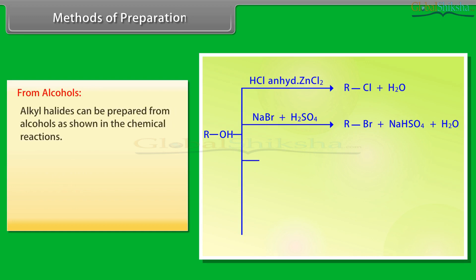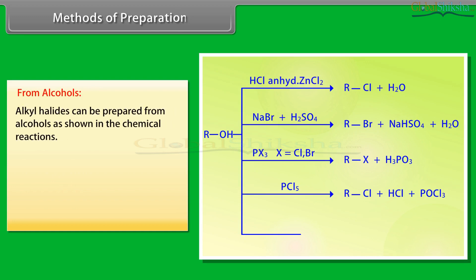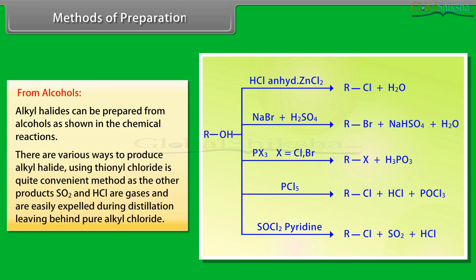From Alcohols: Alkyl halides can be prepared from alcohols as shown in the chemical reactions. There are various ways to produce alkyl halides using thionyl chloride and is quite convenient method as the other products SO2 and HCl are gases and are easily expelled during the distillation, leaving behind pure alkyl chloride.